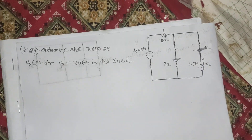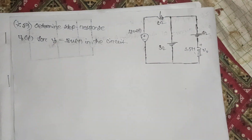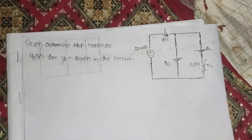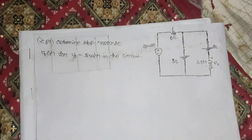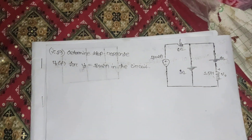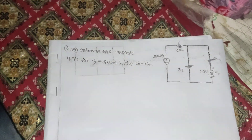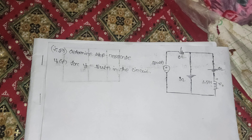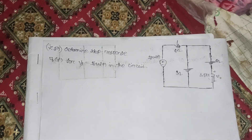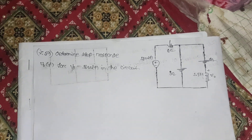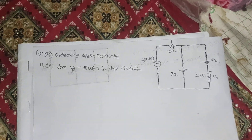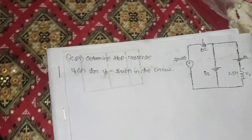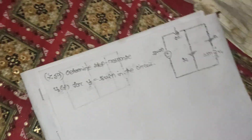Welcome everyone. Today we are solving problem 7.59 from Sadiku's book. The problem says: determine the step response v(t) for v_s equals 18·u(t) in the circuit. Let's go ahead and solve this problem.